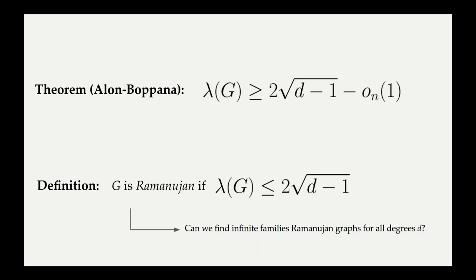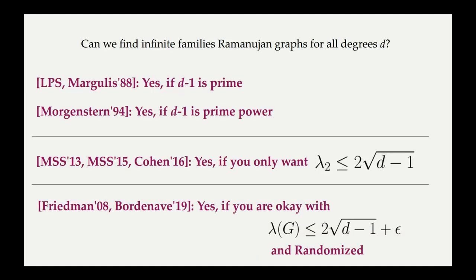Let's look at the different answers given by prior work. If we're satisfied with d-1 prime, where d is the degree of the graph we're constructing, then Lubotzky, Phillips and Sarnak, and independently Margulis, proved that the answer is yes in '88. Later, Morgenstern improved this result to all d such that d-1 is a prime power. In a sequence of works started by Marcus, Spielman and Srivastava and culminating in a result by Cohen, it was recently shown that the answer is yes for one-sided Ramanujan graphs.